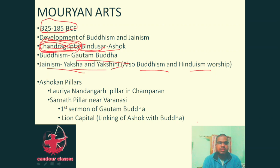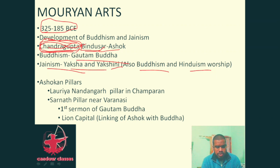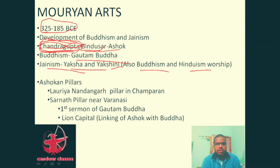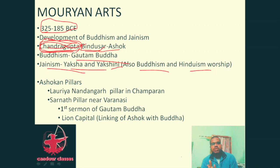Famous Asokan pillars include the Lauriya Nandangarh pillar in Champaran and the Sarnath pillar, also known as the Lion Capital of India. The Sarnath pillar is famous because it was at Sarnath that Gautam Buddha delivered his first sermon after attaining enlightenment. The Lion Capital from Sarnath represents India's national emblem.